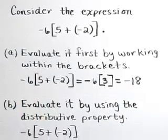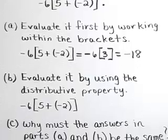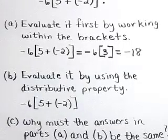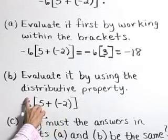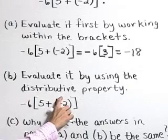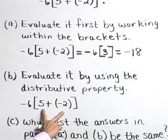In part B, evaluate it by using the distributive property. So here, instead of performing what's in the brackets first, we're going to distribute this -6 to each term through multiplication.